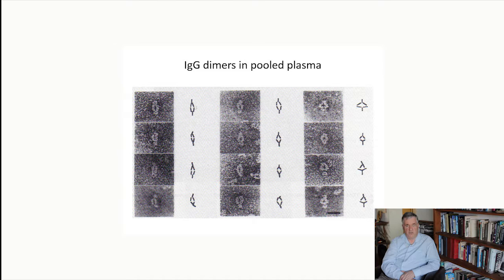If we look at the IgG produced by a large number of different people and pool it, we can detect in electron micrographs pairs of IgG molecules that are binding to each other. This is a picture of dimers of IgG present in pooled plasma. On the left hand side are actual micrographs, and on the right hand side is an interpretation showing what is believed to be the actual IgG pair more clearly.